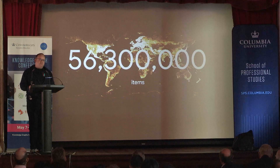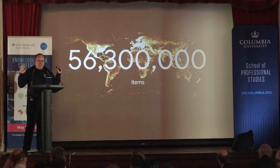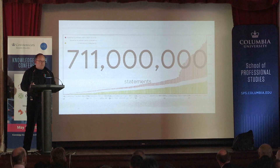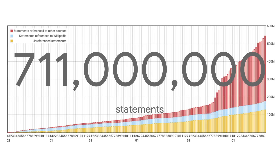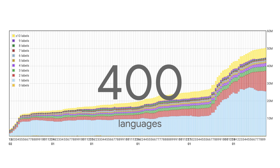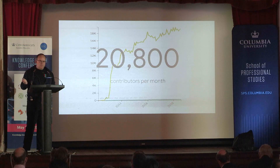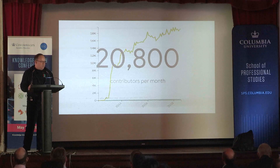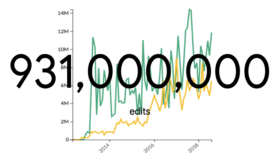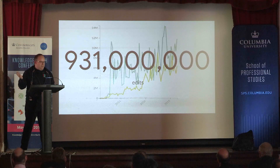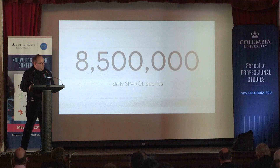So Wikidata itself has by now more than 50 million items about all kinds of topics. This map is actually just generated out of the geocoordinates in Wikidata. There are more than 700 million statements connecting those items inside of Wikidata, building the knowledge graph that you can use in your applications. And the data is available in 400 languages. There are more than 20,000 active contributors working on Wikidata — this number is actually larger than for any Wikipedia besides the English Wikipedia. So it's larger than the German or the French Wikipedia, making it the second or third largest Wiki project in the world. There have been more than 900 million edits to Wikidata, and in the last five years, actually half of the edits happening to the Wikimedia projects were going to Wikidata.